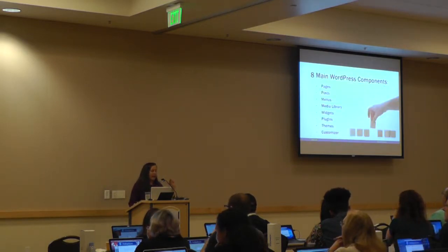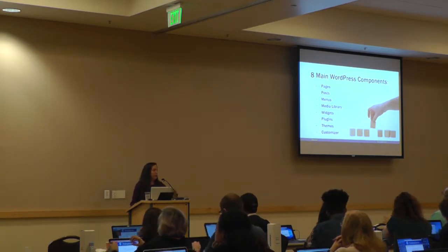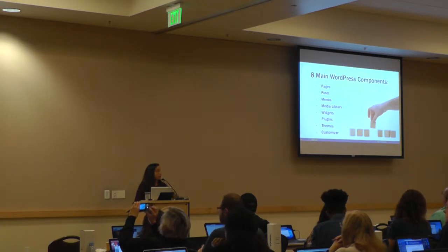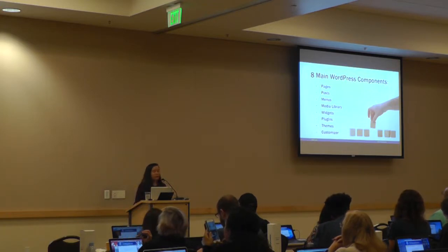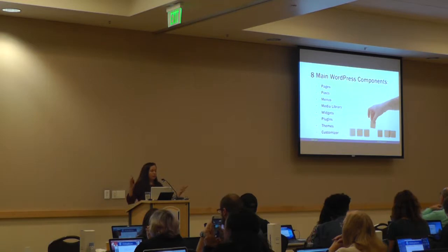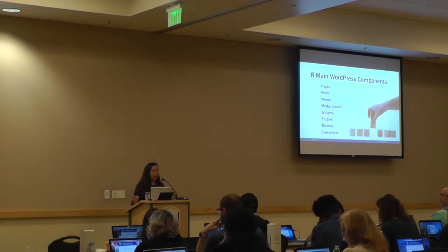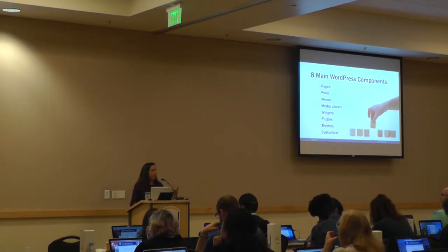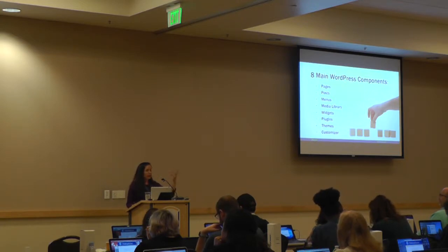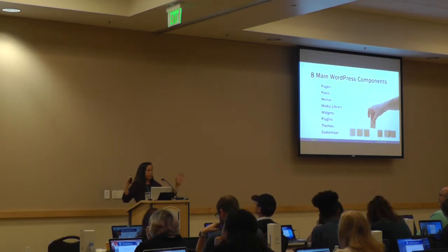There are eight main WordPress components, and throughout the day you're going to learn about all of these. I just want to give you a little bit of an intro. Pages and posts — posts are your blog, pages are static pages like an About Us, and we'll be building that today. The pages and posts are the clay that I've been talking about. You make pages, you make posts — I know it's sort of a little ephemeral right now.